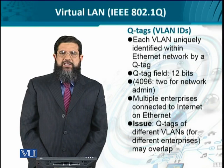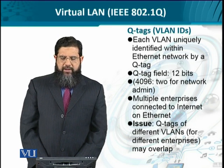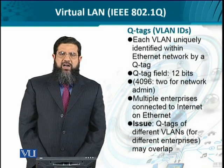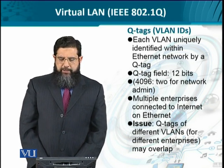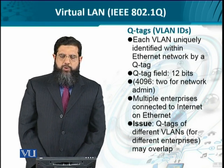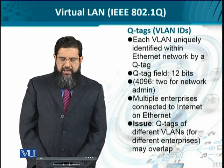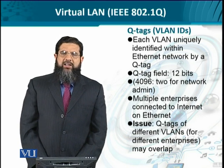How is this achieved? It is achieved by assigning each virtual LAN a unique identifier known as a Q tag. The Q tag is a field defined by IEEE 802.1Q as 12 bits, meaning up to 4096 unique identifiers are possible. Of these, two are reserved for administrative purposes, so we have 4094 unique VLAN IDs. Each ID can be assigned to a specific virtual LAN.